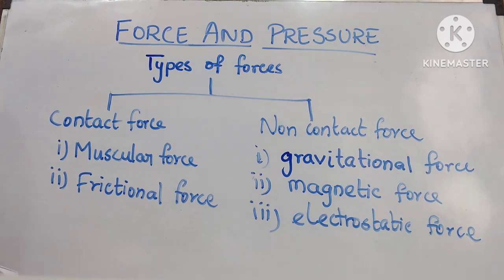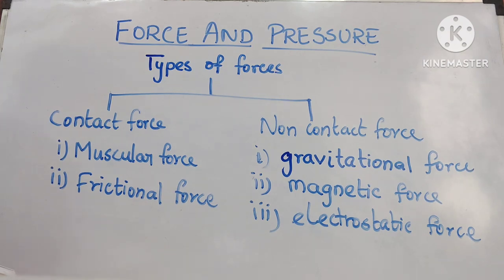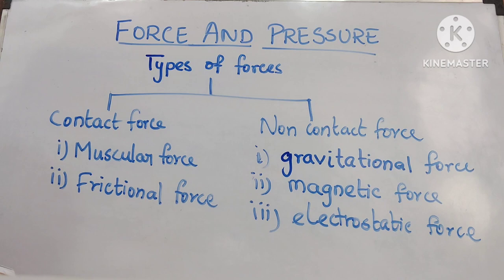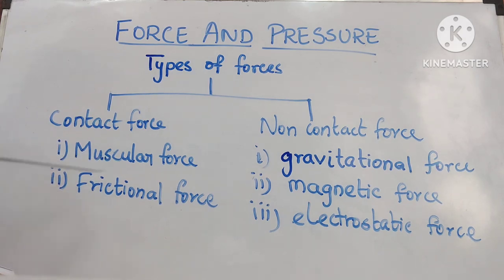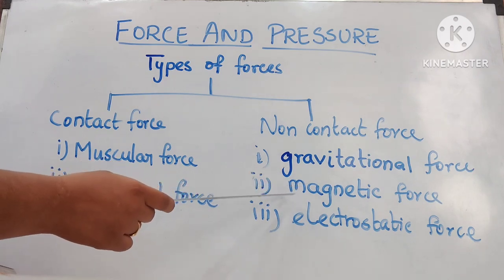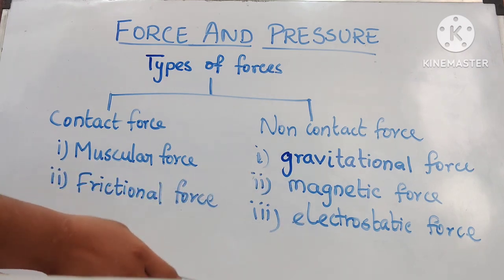Types of forces. There are two main types: contact force and non-contact force. Forces that act on an object by coming in contact with them are called contact force. Forces that act on an object without coming in contact are called non-contact force. Examples of contact force are muscular force and frictional force. Examples of non-contact force are gravitational force, magnetic force, and electrostatic force.